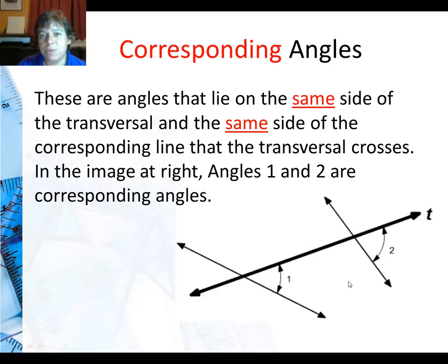So corresponding angles, those are angles that are on the same side of the transversal. There's my transversal. So they're either going to be above the transversal in this picture or below the transversal. And if I rotate this, then they would both be on either the left side of the transversal, which for you would be here, or the right side of the transversal. So these corresponding angles are on the same side of the transversal.